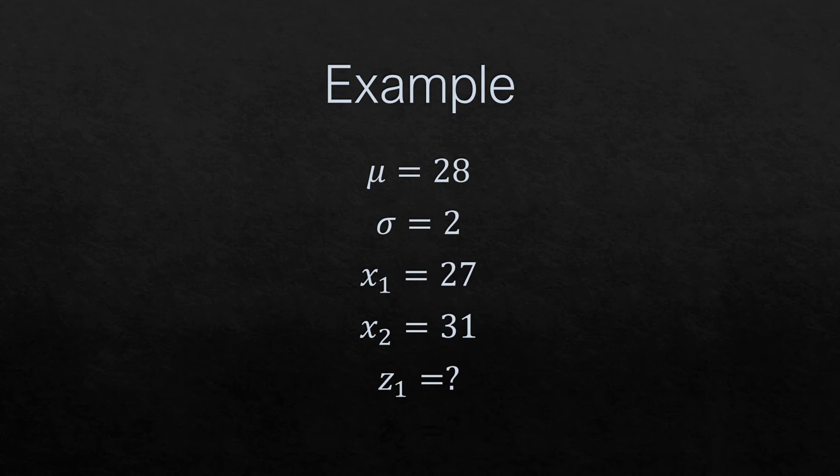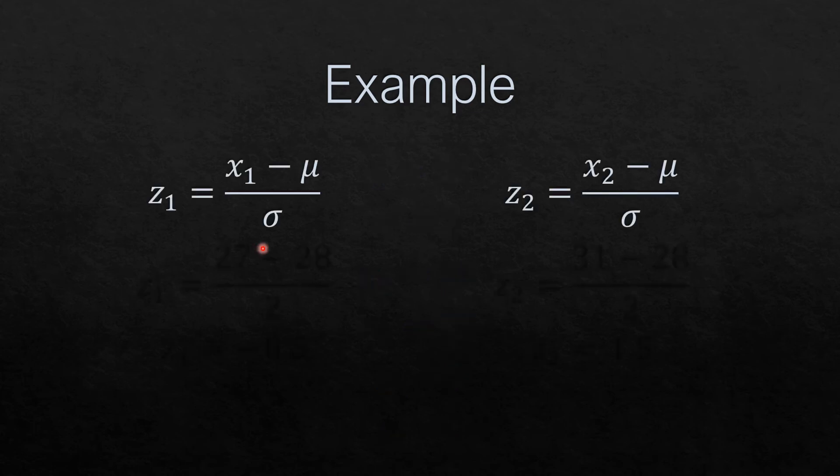Z sub 1 is the corresponding Z-score for X sub 1, and Z sub 2 is the corresponding Z-score for X sub 2 or 31. Z sub 1 equals X sub 1 minus mu all over sigma. X sub 1 is 27, mu is 28, sigma is 2. Performing the operation, we have Z sub 1 as negative 0.5.